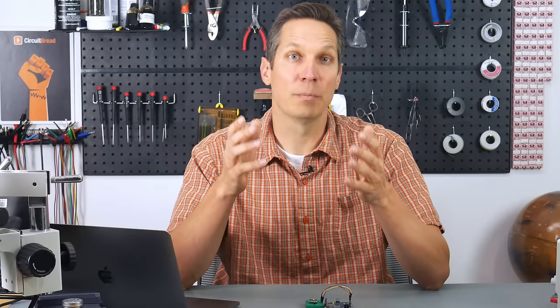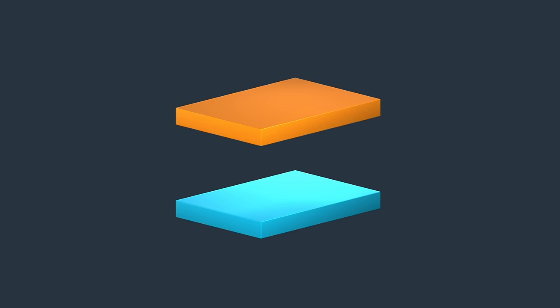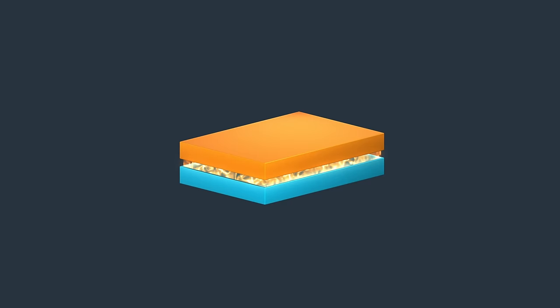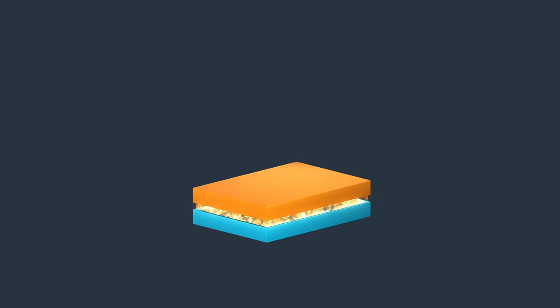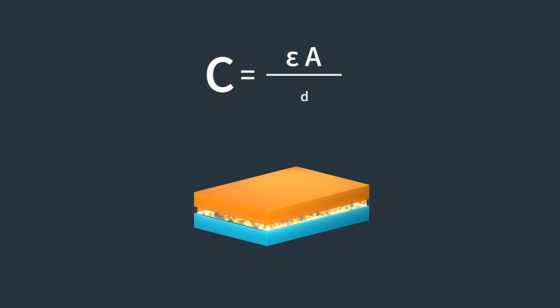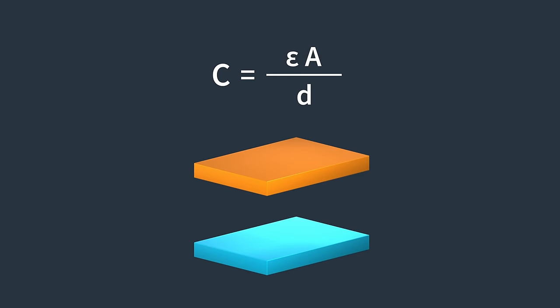If you recall from our introduction to capacitors tutorial, having two objects close to each other but not touching produces a capacitance. Capacitance is based on a few factors, but one of those factors is the distance between the different plates. The closer the plates get without touching, the greater the capacitance. If they move farther apart, the capacitance goes down.